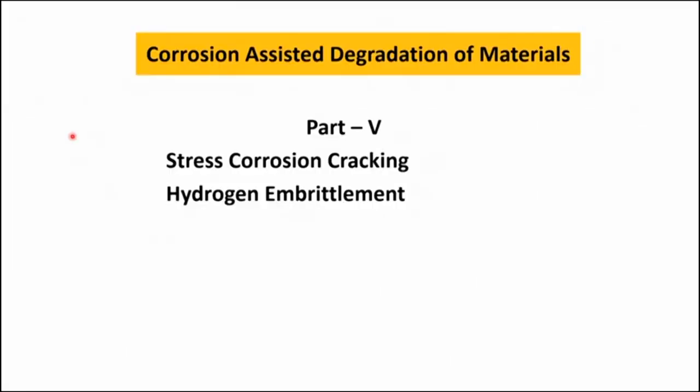In this talk we will discuss two important forms of corrosion that are very much dependent on stress. One is stress corrosion cracking, and another one is hydrogen embrittlement. Both kinds of corrosion are very important and you have to understand that they are dependent on the microstructure and very much specific to the environment.